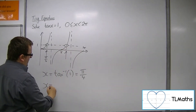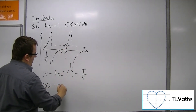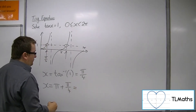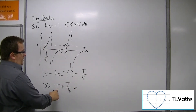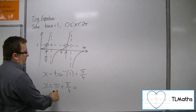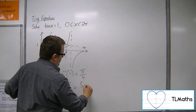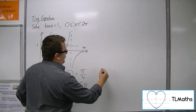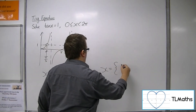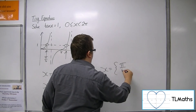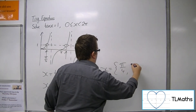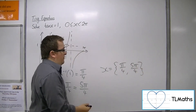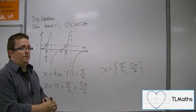You can get the second solution by adding pi over 4 to pi. Pi is 4 pi over 4, so this must be 5 pi over 4. And so your two solutions are pi over 4 and 5 pi over 4.